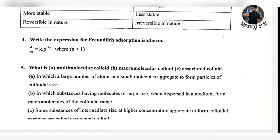Write the expression for Freundlich adsorption isotherm. It is very simple: x divided by m is equal to k times p raised to the power 1 divided by n. This is the Freundlich adsorption isotherm formula.